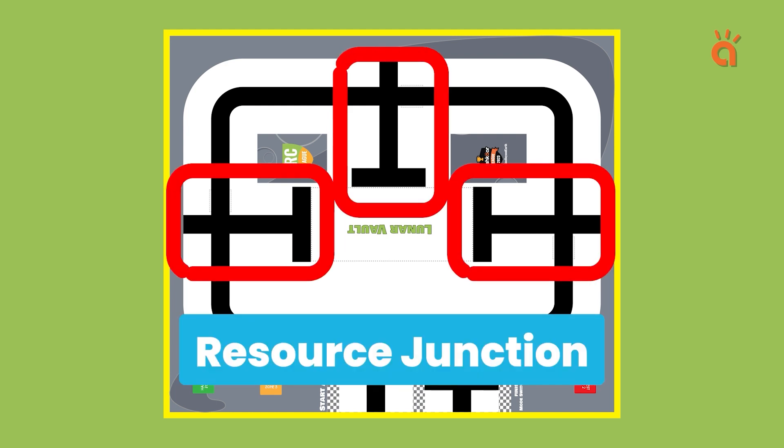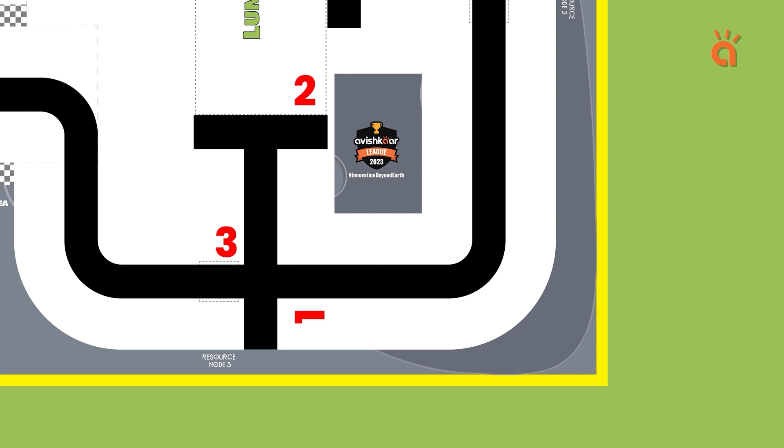Now, we have three resource junctions in RNA and each junction have three black intersections. So we will program our robot for one resource junction first.